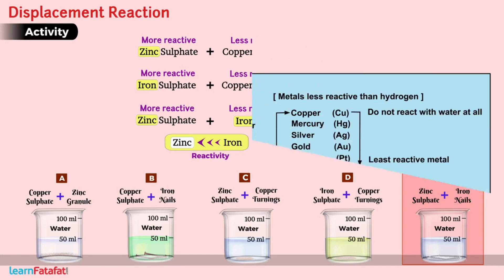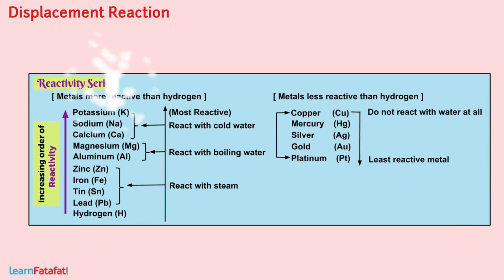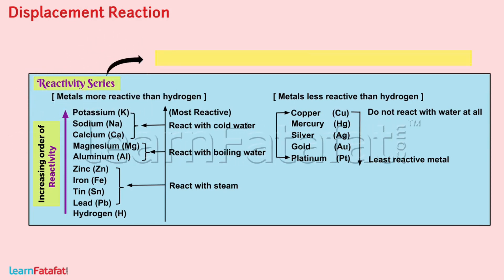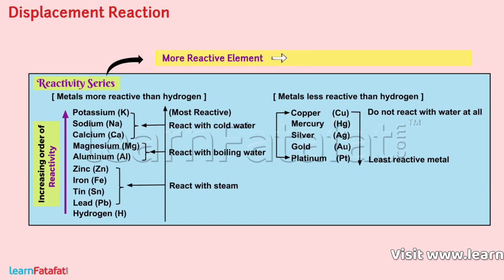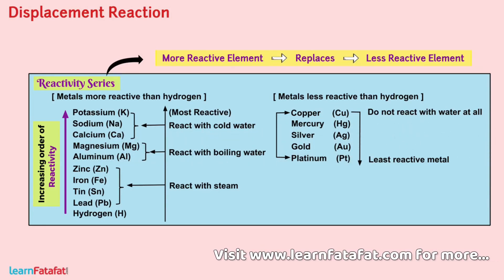By carrying out such displacement reactions, we can arrange elements in order of their reactivity. Such an arrangement is called a reactivity series. In a reactivity series, a more reactive element always replaces a less reactive element from its compound.